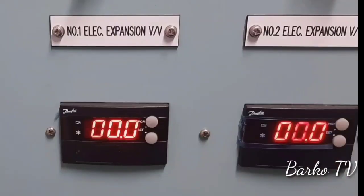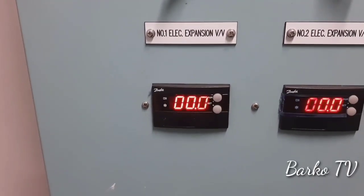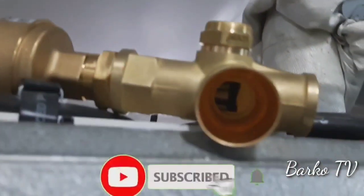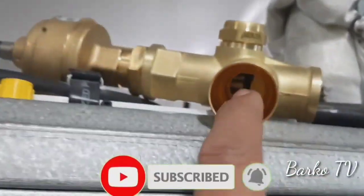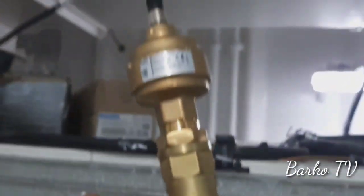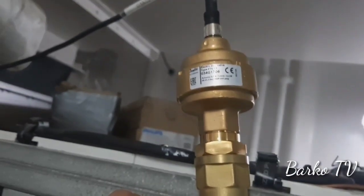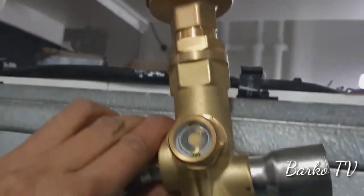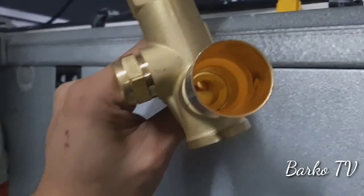It's super easy. Next, for the expansion valve one and expansion valve two controller — this is the controller for the expansion valve. You can see 00; it means the expansion valve must be closed. That is the closed position.